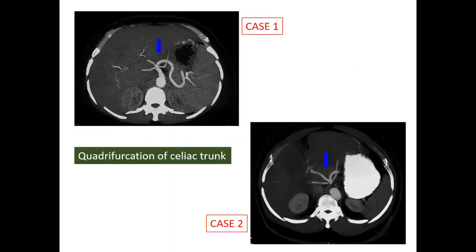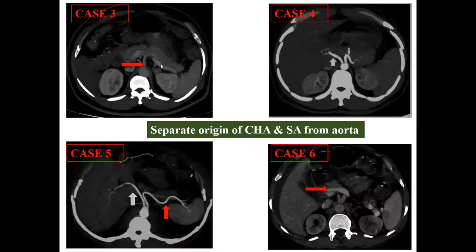Now we will see the cases. Cases 1 and 2 show quadrification of the celiac trunk. Cases 3, 4, 5, and 6 show the splenic artery and hepatic artery with separate origins from the aorta. Post-contrast MIP CT images in the transaxial section show the separate origin of the common hepatic artery directly from the aorta at the same level. The celiac axis with congenital narrowing and an elephant trunk appearance is seen in case 6, where the common hepatic and splenic arteries have a common trunk.